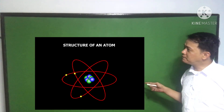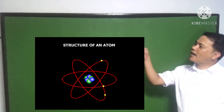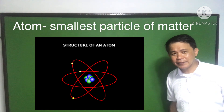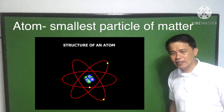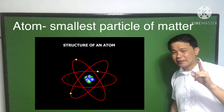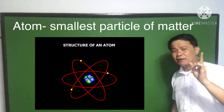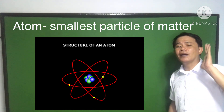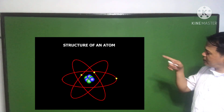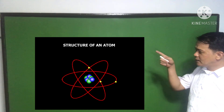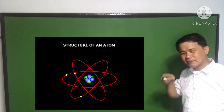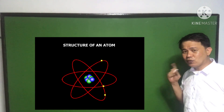So, what is an atom? The atom is the smallest particle of matter. Everything in this universe is made up of matter, thus made up of atoms. As you can see in the figure, the circle inside is called the nucleus.